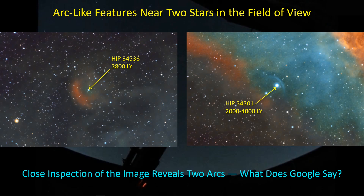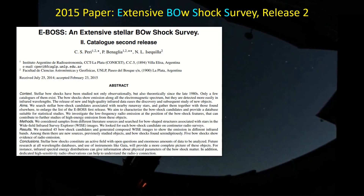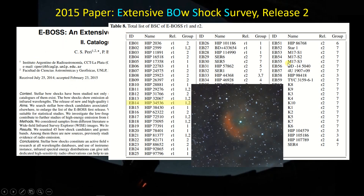When you get designations for stars, you look them up in a Google search. Sure enough, the first paper that came up was a 2015 paper where the authors present what they call the Extensive Stellar Bow Shock Survey, release two. Release one was back in 2012, where they identified 28 bow shock candidates. In the 2015 release they increased that by 45 stars, for a total of 73 stars. Interestingly, when you look at their table, HIP 34536 was in fact included in their original 28-star set.